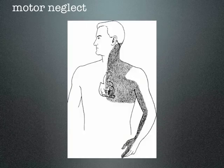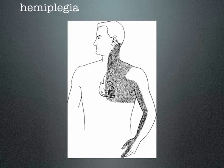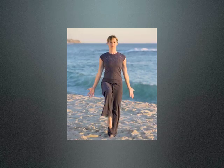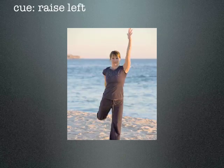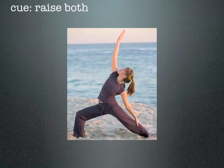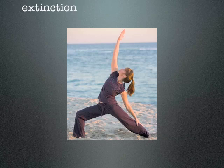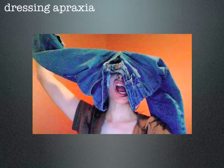Motor neglect can manifest in the form of hemiplegia, and the phenomenon of extinction persists here as well. If we ask a patient to raise their right arm, they will do that. If we ask them to raise their left arm, they will do that too. But if we ask them to raise both, they only raise the right. So the phenomenon of extinction persists with motor commands.